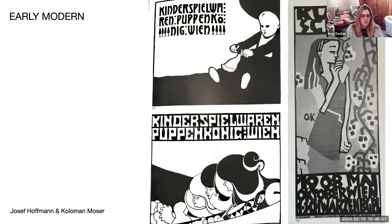Josef Hoffmann and Koloman Moser earned enough recognition to share their ideas with a new generation of artists. You can see they were not only designing very simplistic illustrations, really pushing simplicity and simplification — they were also designing typefaces and exploring really stylized layouts. A lot of asymmetry here; they've moved away from that single symmetrical design.